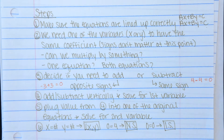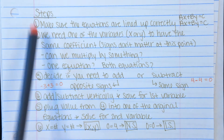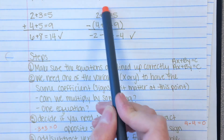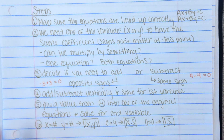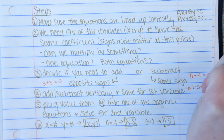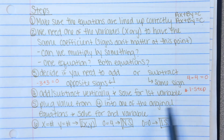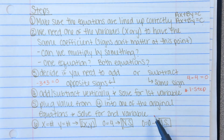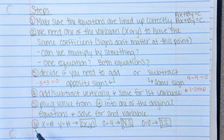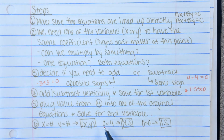Step four: after you decide if you're adding or subtracting, do that operation — add or subtract vertically — then solve for your first variable. After you add or subtract, you should be left with a one-step equation to solve. Step five: take the value from step four, plug it back into one of your original equations, and solve for your second variable. Step six: make your answer. If you have x equals a number and y equals a number, write that as an ordered pair. If you get zero equals four, it's no solution; zero equals zero is infinite solutions — remember, you have three different solution types.